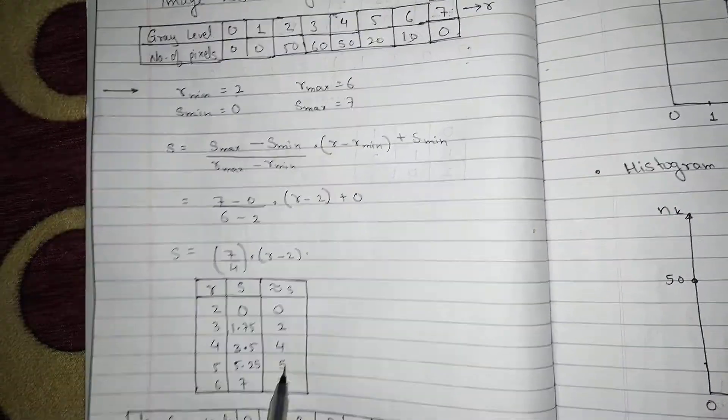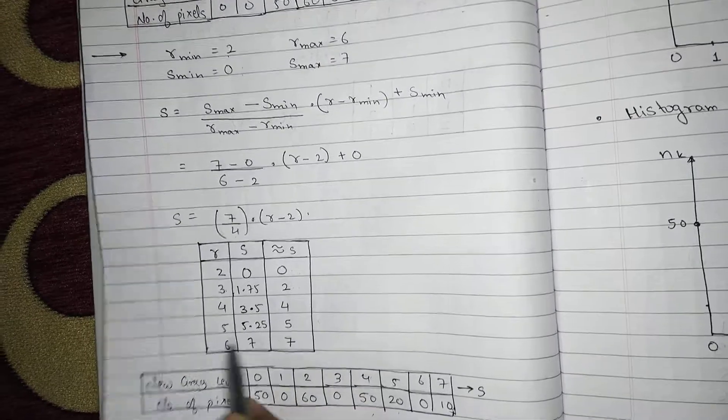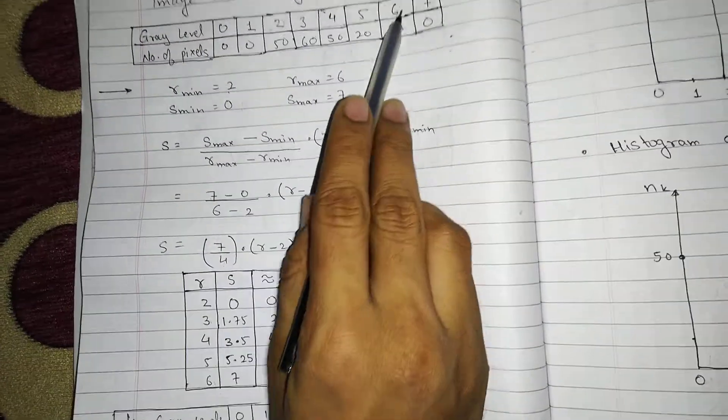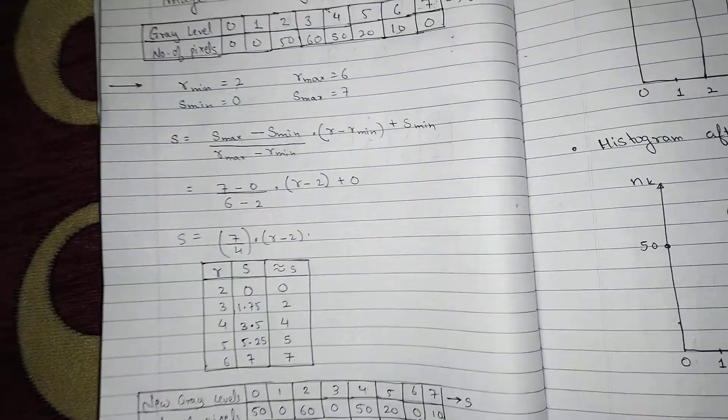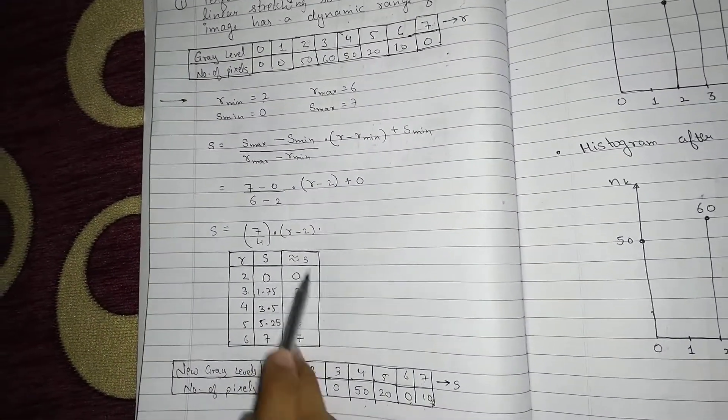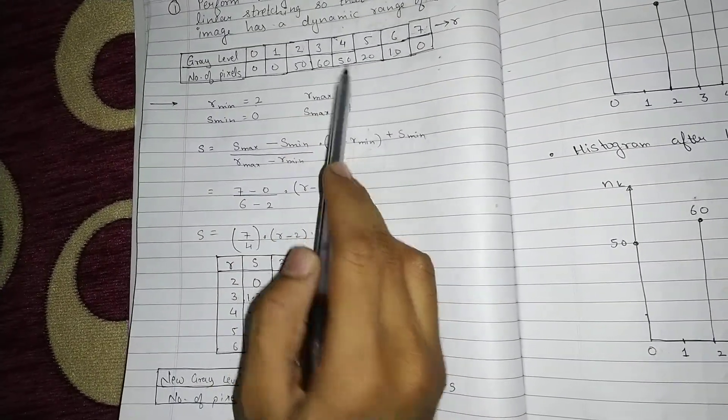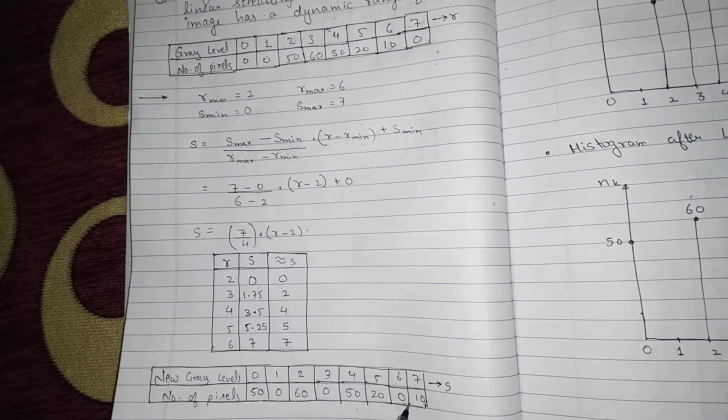5 corresponds to 5, it is 20. No 6 present, so it will be 0. 7 corresponds to 6, 6 previously was 10. So 7 will be now 10. So basically you have to compare this S values with R values and check the number of pixels previously and write that and whatever is absent take it as 0.